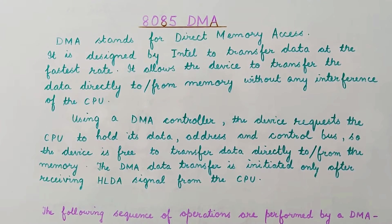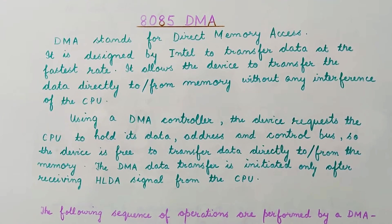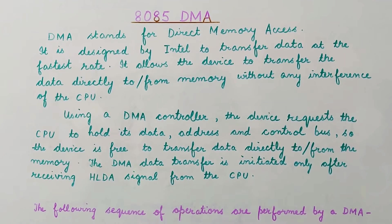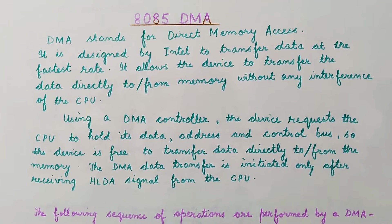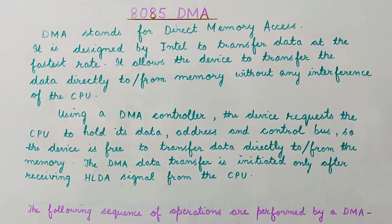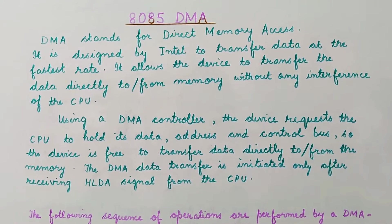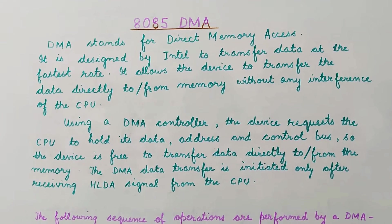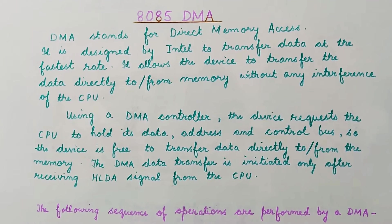The DMA controller sends a request to the CPU for holding the data, address, and control bus — that is, to hold the system bus. System bus means the data bus, address bus, and control bus.